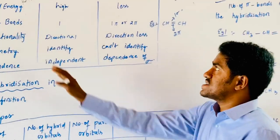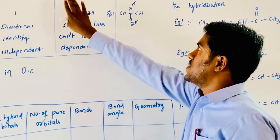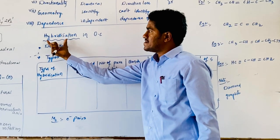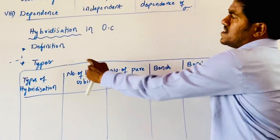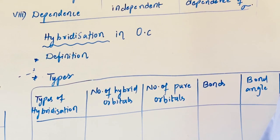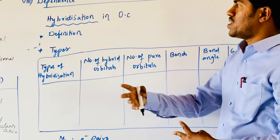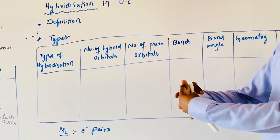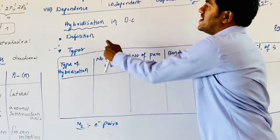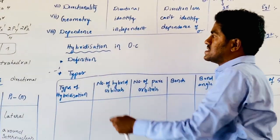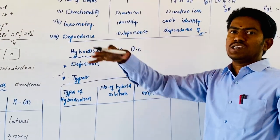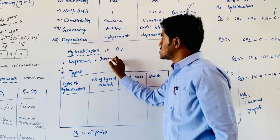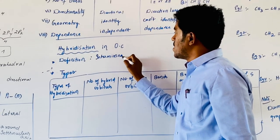Coming to hybridization — the definition: atomic orbitals overlap or intermix to form new hybrid orbitals. Atomic orbitals intermix to form hybrid orbitals by decreasing energy, meaning hybrid orbitals are highly stable.